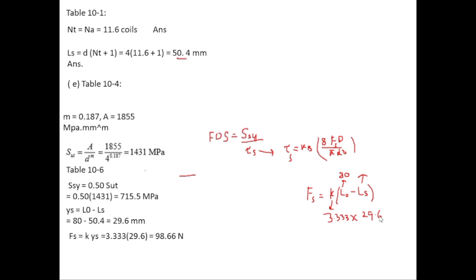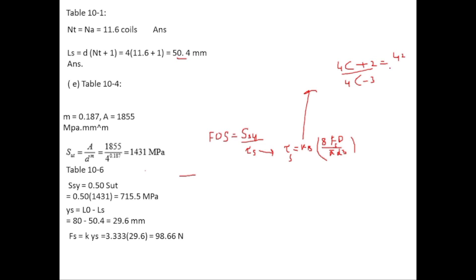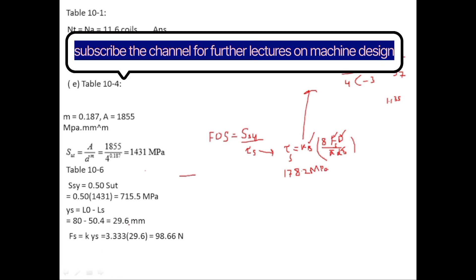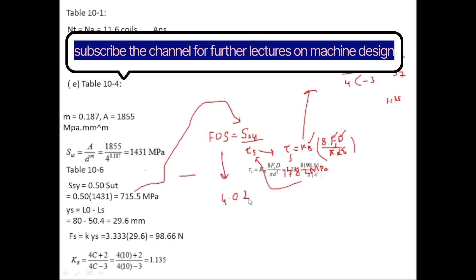K_B equals (4C + 2)/(4C - 3). With C = 10, K_B = 42/37 = 1.135. With K_B, F_S, mean diameter D, and wire diameter d all known, substituting into the shear stress formula gives tau_S = 178.2 MPa. Therefore, factor of safety = SSY / tau_S = 715.5 / 178.2 = 4.02.